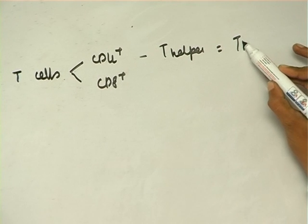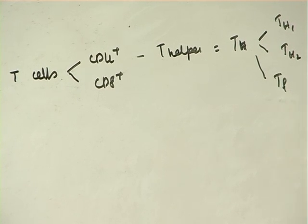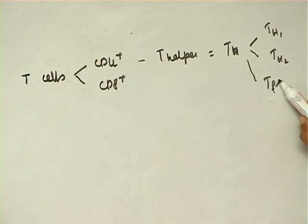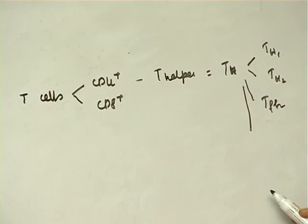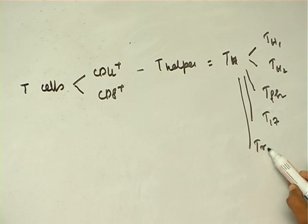Now the TH cells can be TH1 or TH2 or T follicular helper cells, or it could be TH17 cells, or it could be Treg cells.